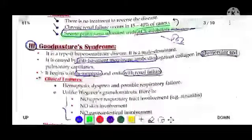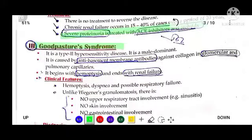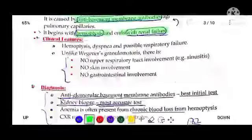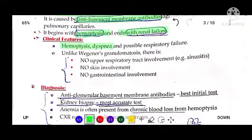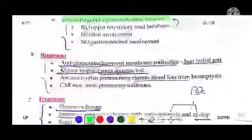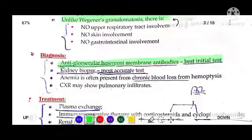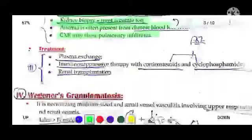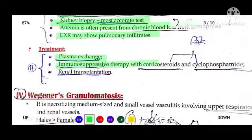Goodpasture syndrome is a type 2 hypersensitivity reaction in which anti-glomerular basement membrane antibodies are produced, causing renal failure along with hemoptysis. The respiratory system is involved with symptoms including blood in sputum and dyspnea. Diagnosis is based on anti-GBM antibodies, renal biopsy, and anemia. Chest X-ray shows pulmonary infiltrates. Treatment involves plasma exchange, immunosuppressive therapy, and renal transplantation.